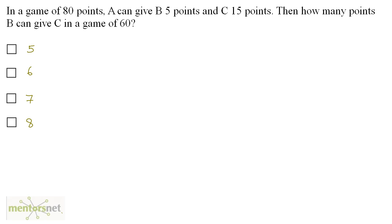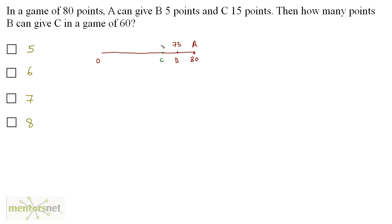In a game of 80 points, A can give B 5 points and C 15 points. The game is of 80 points, so we have 0 to 80 points. A can give B 5 points, meaning if A is the winner, B is 5 points behind — B has 80 minus 5, that is 75 points. A can also give C 15 points, so C has 80 minus 15, which equals 65 points.